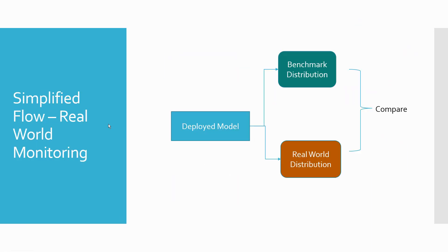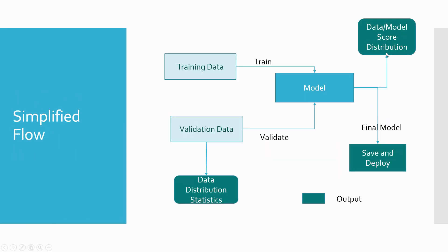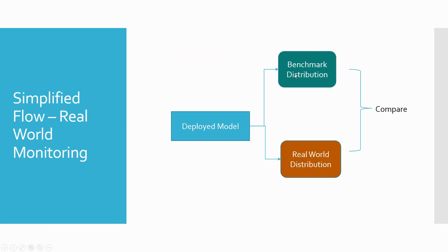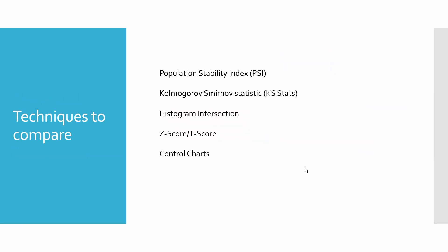Once the model is deployed, you have your benchmark distribution from the training or validation phase — specifically the data and model score distribution. As you score new instances in the real world, you have your real-world distribution. What you are doing is comparing your benchmark distribution against the real-world distribution to see how close they are. If the real-world distribution looks like an outlier to your benchmark distribution, that means your model is having issues and you may want to retrain it or take it down and wait for new instances to be collected.